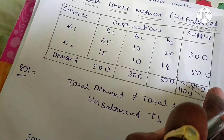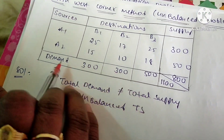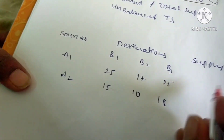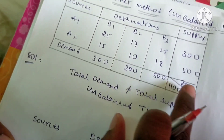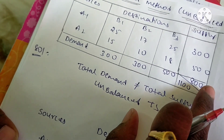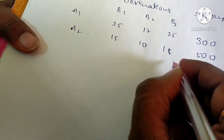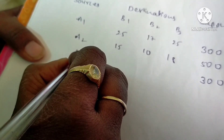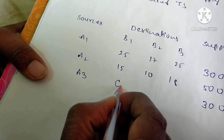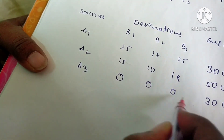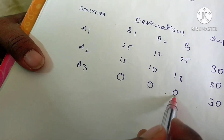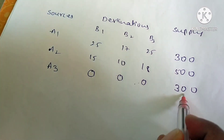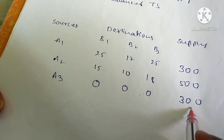To balance the problem, we need to add a dummy row. Here we have the given sources and destinations. We have demand values and supply totals of 1100 and 800 respectively. We need 300 units of supply, so we add a dummy row A3 with a supply of 300 and transportation costs of 0 for all destinations.